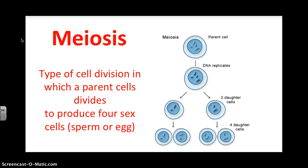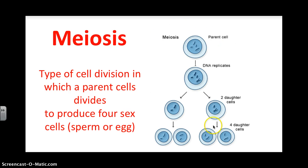What meiosis does is it takes the original parent cell, as seen in this diagram, and it splits the chromosome number in half. By doing so, it also produces four daughter cells. This might look similar to mitosis, which is a type of cell division that we learned earlier this year, but mitosis produces two identical cells.